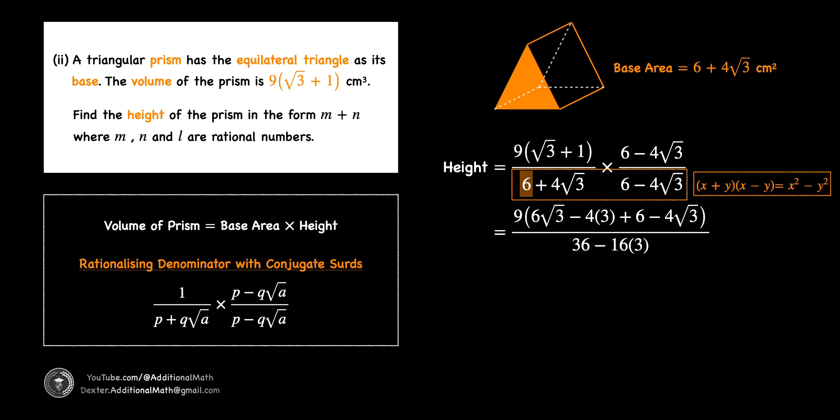Squaring 6 in the denominator gives 36, and squaring 4√3 gives 16 × 3. Next, we expand the numerator while keeping the constant 9 outside the parenthesis. The first term in this expansion is 6√3. Then, multiplying √3 by -4√3 gives -4 × 3. Followed by positive 6 and finishing the expansion with -4√3.